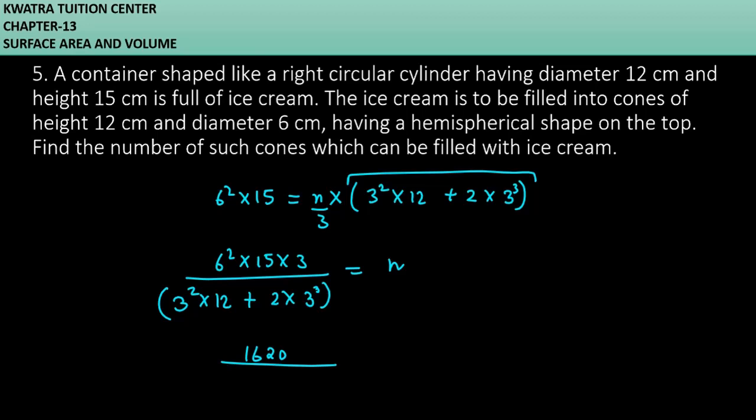Below we have 9 into 12 which is 108, plus 2 into 3 cube. 3 cube is 27, 27 times 2 is 54, so this is 162. Now divide both of them. 1620 divided by 162 gives you 10, which is the number of cones that can be filled with ice cream.